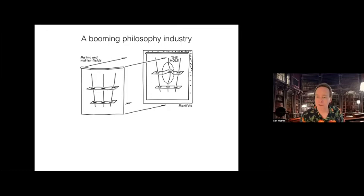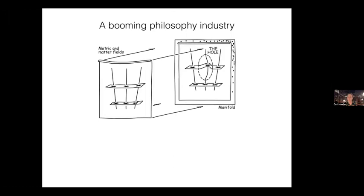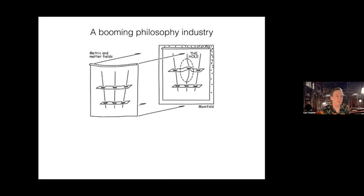As you all know, since Earman and Norton's original paper was published in 1987, the discussions prompted by the hole argument became a booming philosophy industry in its own right, with literally hundreds of papers having been written on the topic. And because of that, I think I can count on everybody understanding what the original hole argument was supposed to show. I put this lovely diagram, which is from the hand of John Norton — those familiar with his works will recognize the artwork instantly.